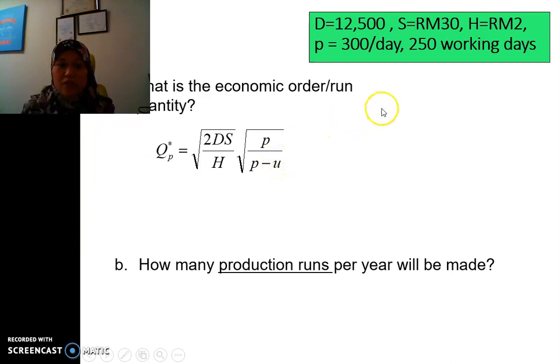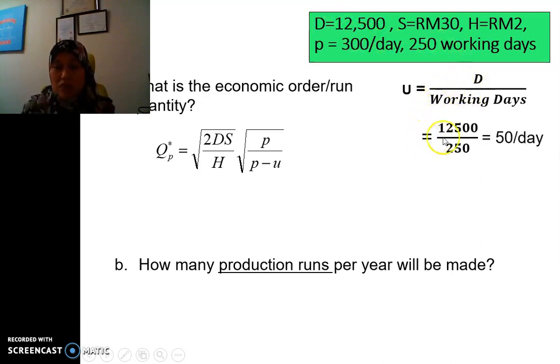Usage rate can be found from the annual demand, in which we have the annual demand divided by the working days. For this case, we have 12,500, the annual demand, and the working days is 250, so it's 50 units per day for the usage rate. So now we can start to calculate our Q.